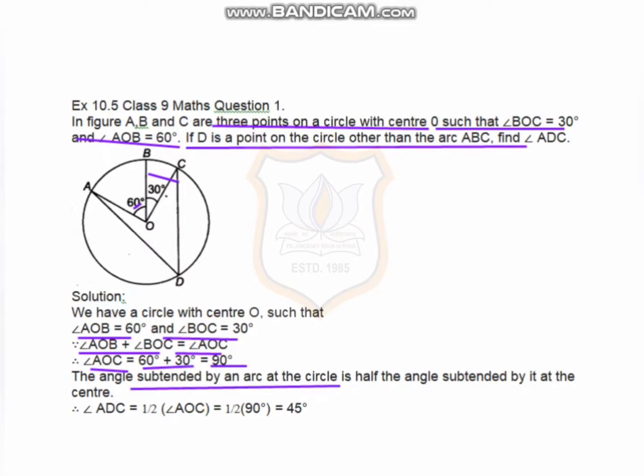The angle subtended by an arc at the circle is half the angle subtended by it at the center. So, ADC equals half of AOC, which is half of 90 degrees, equals 45 degrees.